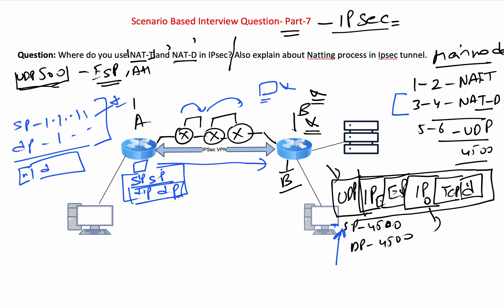So NAT-D helps you like that. And if there is any NATing device in between, the hash value will change. And once you have noticed the hash value changing, you can make sure that you enable NATing on A and B. You need to enable NAT-D or NAT-T. Some devices will say NAT-D, but you need to enable NATing on both the devices.